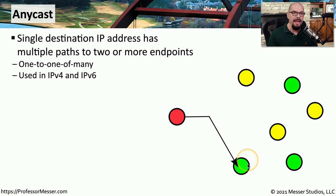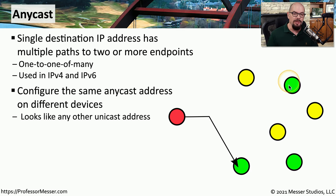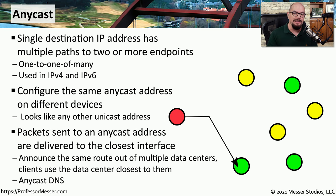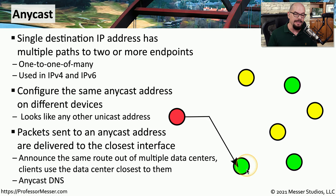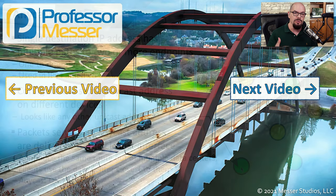Anycast is used in both IPv4 and IPv6. If you look at the configuration of these devices, they appear to have the same unicast address assigned to them, but they're actually Anycast addresses and will respond to any requests for that particular address. This technology is used extensively on the internet — you can request information via Anycast and the closest device will respond. This allows you to distribute servers geographically and communicate to the device closest to you. This is commonly used with DNS, where there are only 13 defined root DNS servers, but in reality thousands exist because they're configured to respond using Anycast.